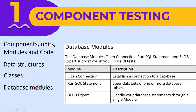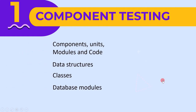The last test object is the database module. When we work with SQL Server, we work on database modules. For example, OpenConnection is one such database module which establishes a connection to a database. During component testing, we can test this module. These were the test objects of component testing: component, unit, modules, code, data structure, classes, and database modules.